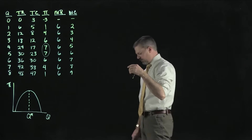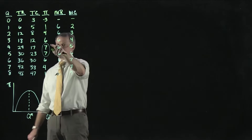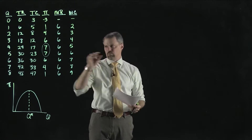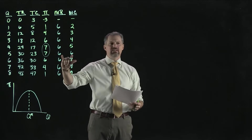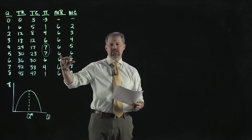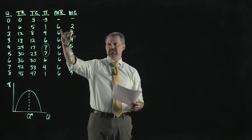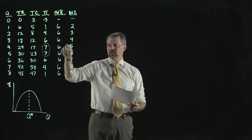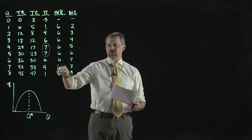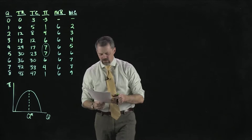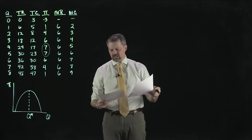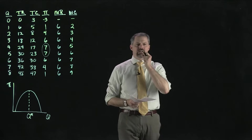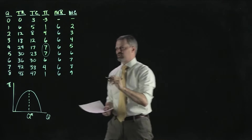We already know where profit is maximized. Let's look at what's happening to marginal revenue and marginal cost right in that region. What we see is that right in there, marginal revenue and marginal cost become equal. Every place below that, marginal revenue is greater than marginal cost. Above that, marginal cost is greater than marginal revenue. So to maximize profit, the firm produces the quantity where marginal revenue equals marginal cost.